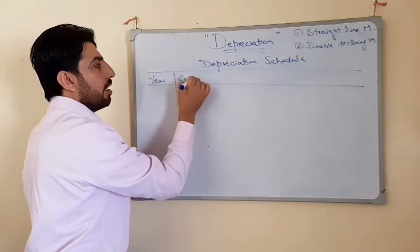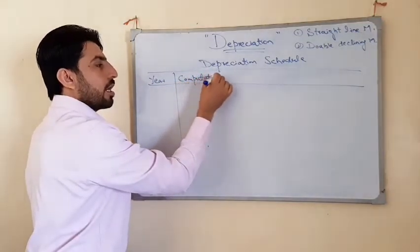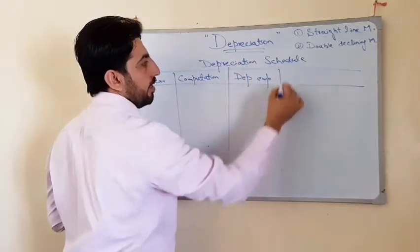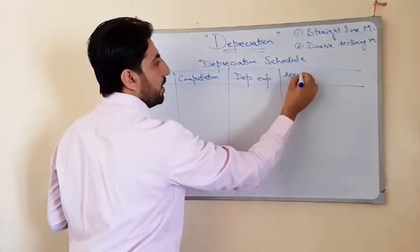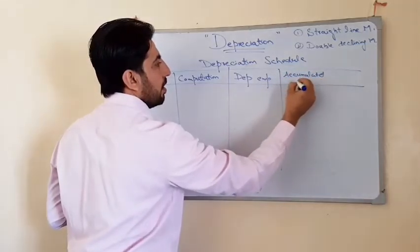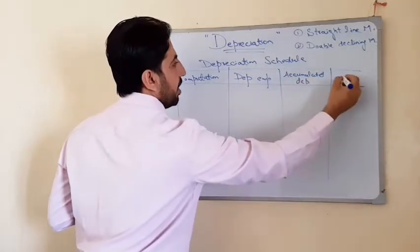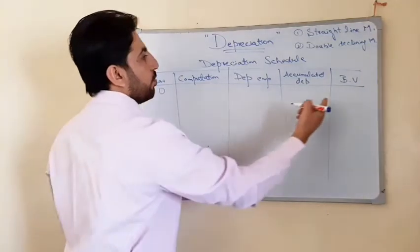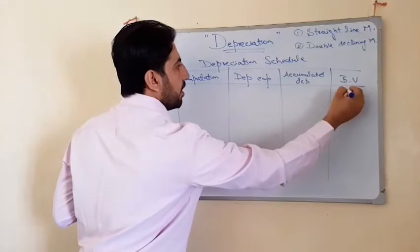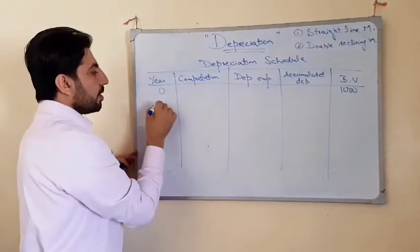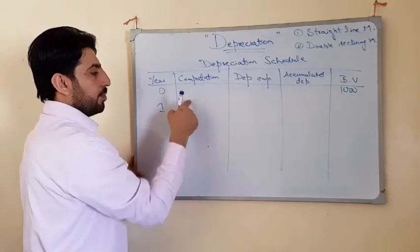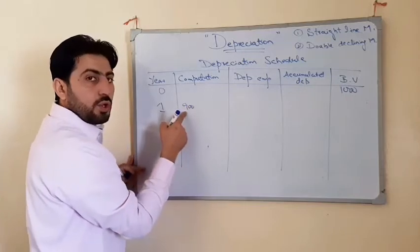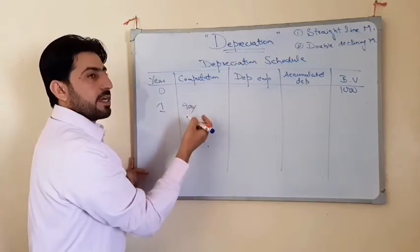The depreciation schedule has the following columns: Year, Computation, Depreciation Expense, Accumulated Depreciation, and Ending Book Value. When we had the machine, its beginning value was 1,000. The depreciable cost is 900 over 5 years.